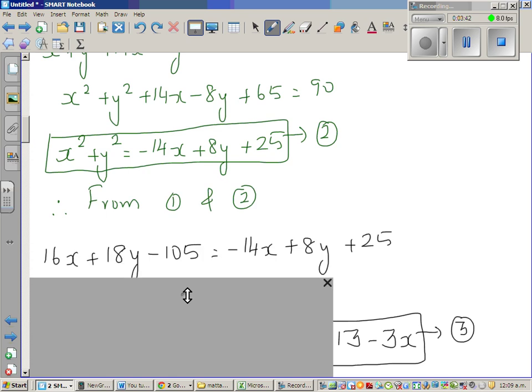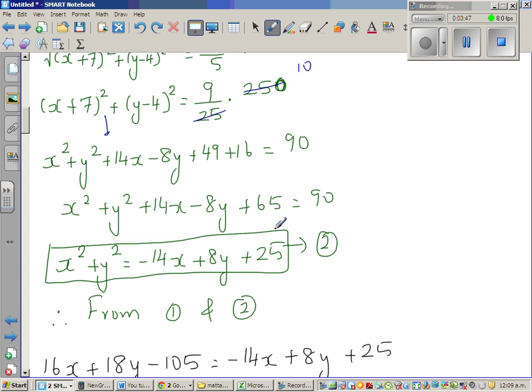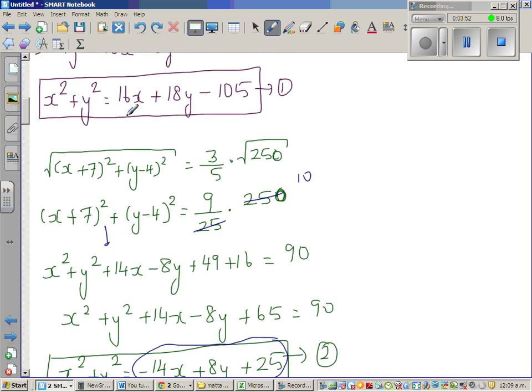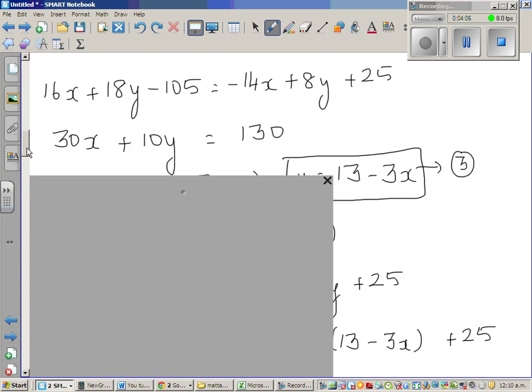From equations 1 and 2, I can say that this is equal to this, and that's what I've done. So that's now making, if you add 14x to this side, you have to add 14x to this side, and now you're dividing by 10, you get this, and making y the subject, y is 13 minus 3x.